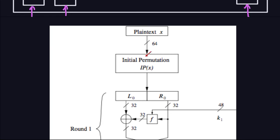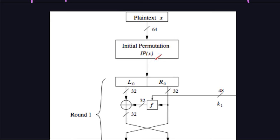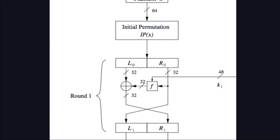After the initial permutation is done, it comes down to the first round, called round one. That round takes the 64-bit block and divides it into the left-hand side L0 and the right-hand side R0. The right-hand side, which is 32 bits, goes all the way down unchanged to the output and becomes the left-hand side of the next 64-bit block. So those 32 bits go down here exactly as they are.